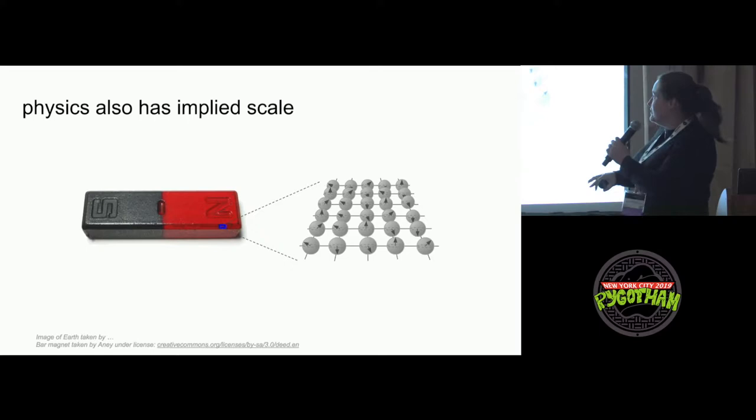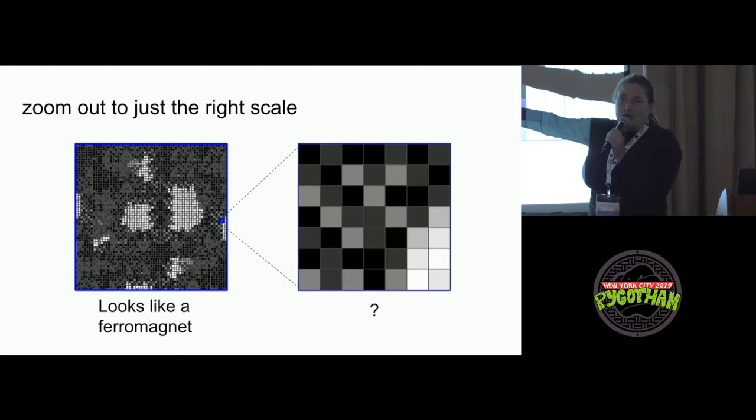So physics also has implied scale. You see this bar magnet, and you look at the constituents, and they're all these little spins, and they're interacting with each other. But it's very unclear what exactly about these interactions makes this a magnet. So what you need to do is, you need to zoom out, and you see there those magnetic domains, but if you zoom in again, at the detailed level, it is not clear at all.